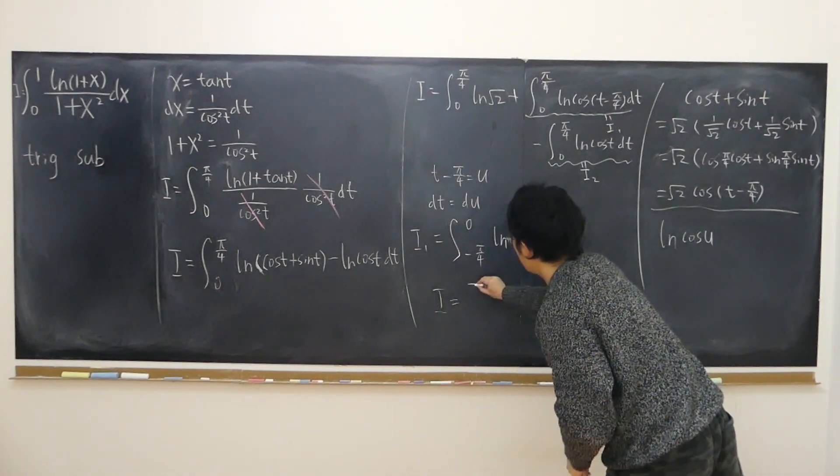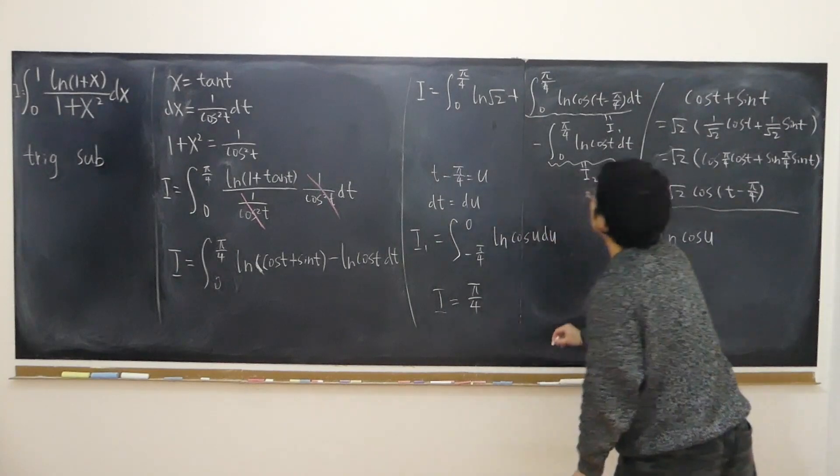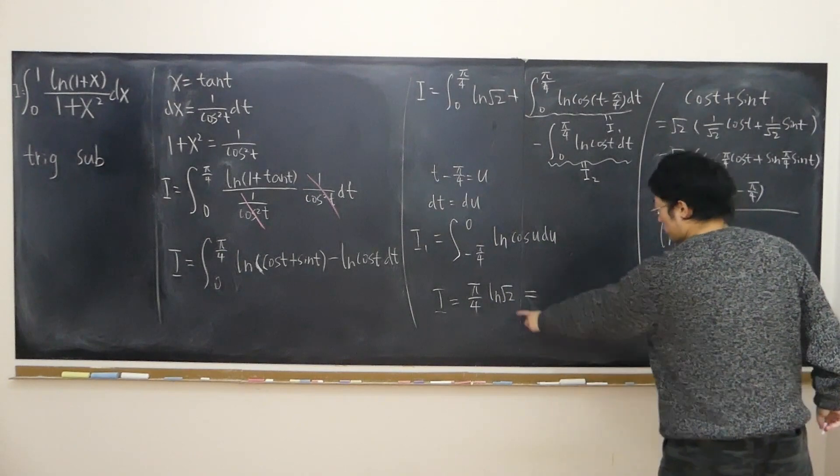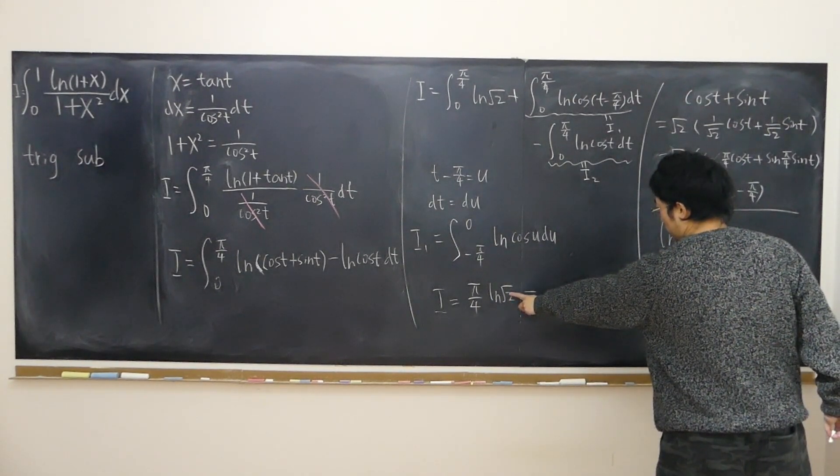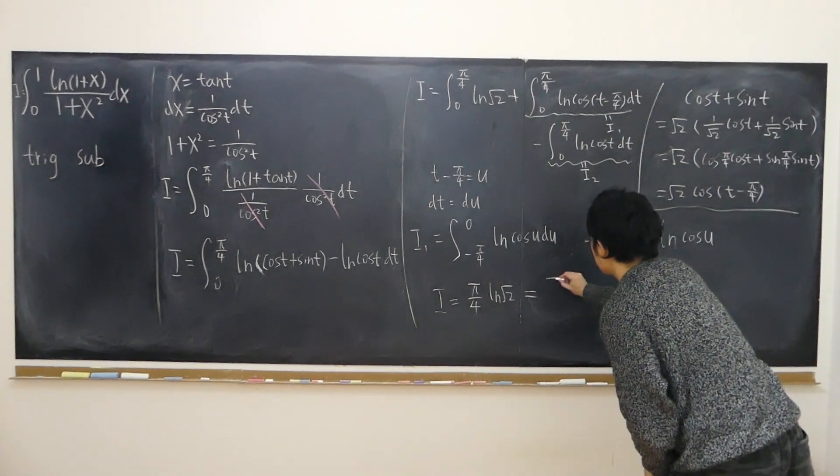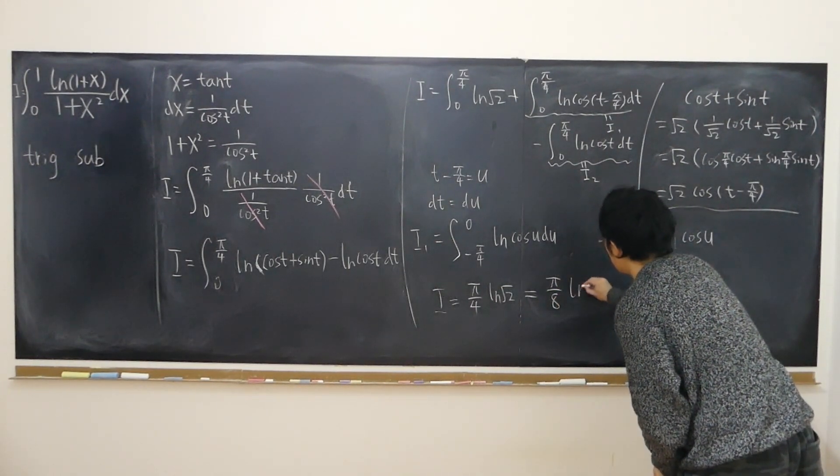So this part is what? Pi over 4 times log of square root of 2. And square root of 2 is 2 to the power of half. Take down the half to the front. Pi over 8 log of 2.